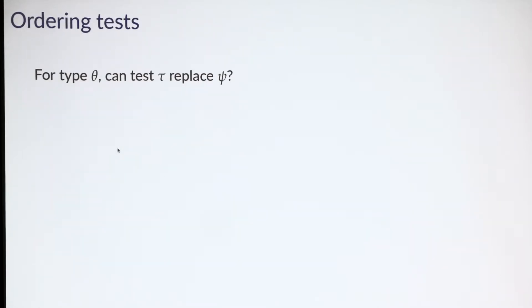In order to do that, we need to define an order on the space of tests. The crucial question is, for a fixed type theta, when can one test tau replace another test psi? What do I mean by replace? Suppose the principal were currently assigning test psi to type theta. Could the principal instead use test tau and then a possibly different decision rule to give the agent the same distribution over decisions?